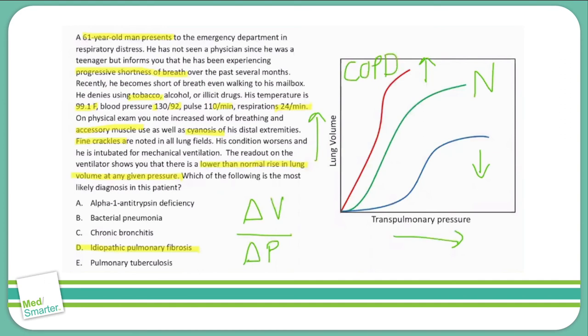Whereas what causes decreased compliance? That's things like interstitial lung disease. So restrictive lung diseases prevent the lung from expanding properly and can cause a decrease in compliance. You can force more pressure in, but the amount of change in volume is not going to be the same as in a normal lung.